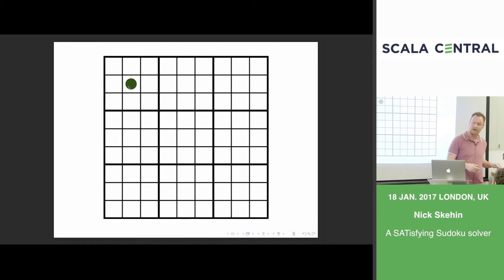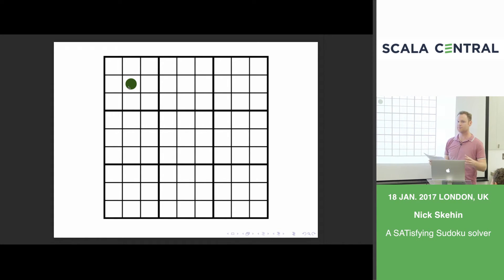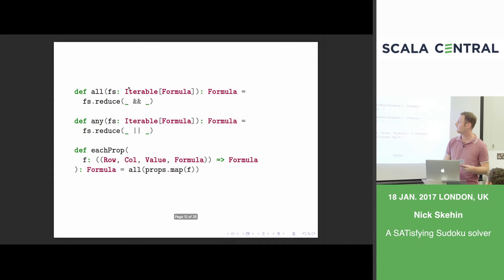Next what we need to think about is what constraints affect a single square because we've got the atomic propositions but we need to encode the rules of Sudoku in our language. So first up we need some helpers. This just takes a sequence of formulae and puts an and between them. And this one any, it takes a sequence of formula and puts or between them. And then finally this one, often it's quite useful to say something about every combination of row, column, and value.